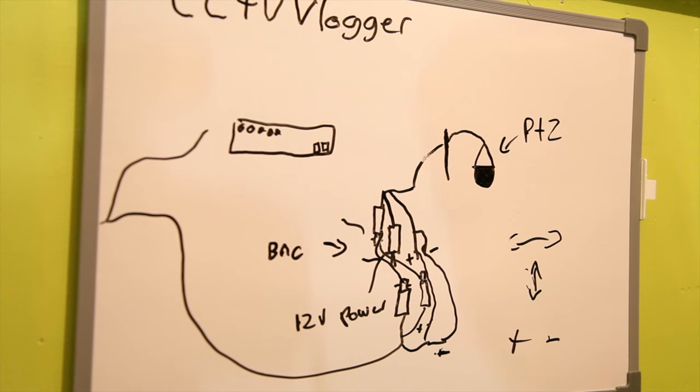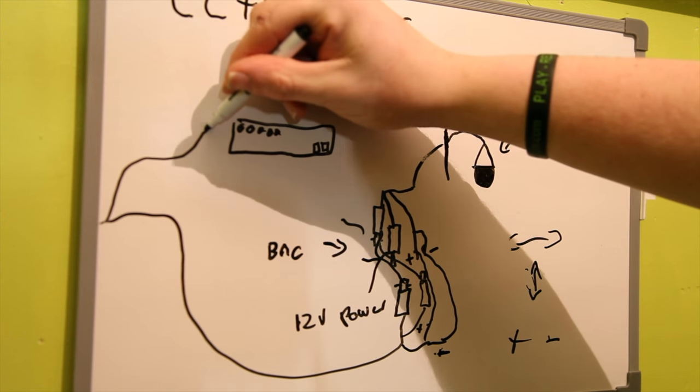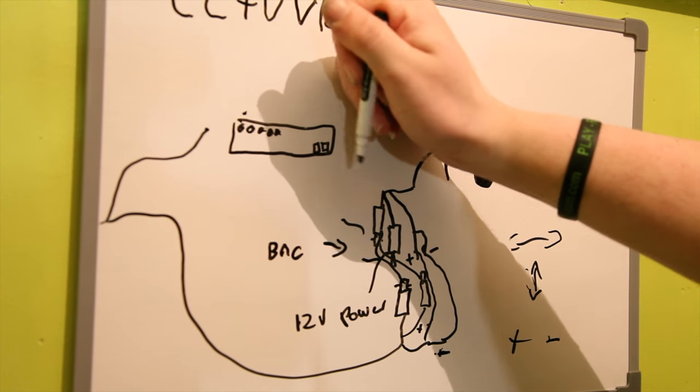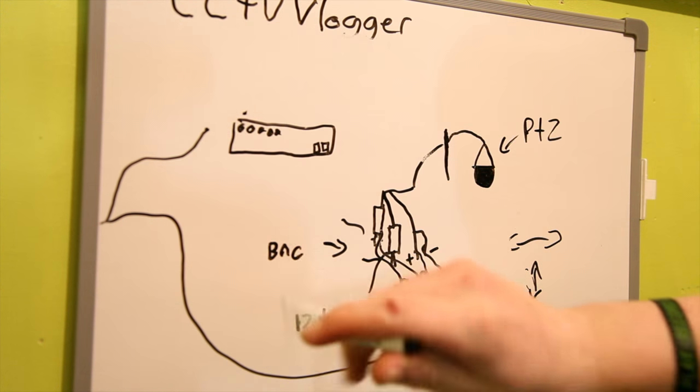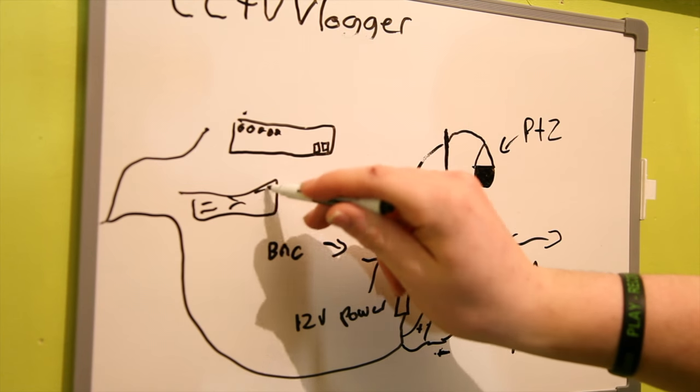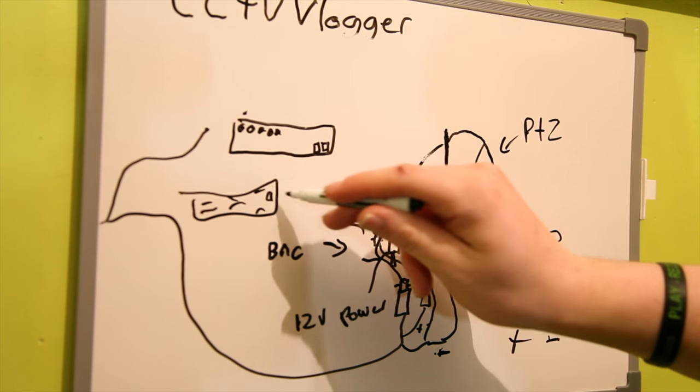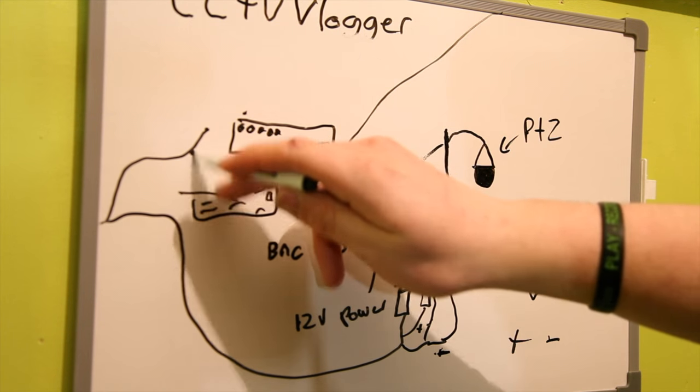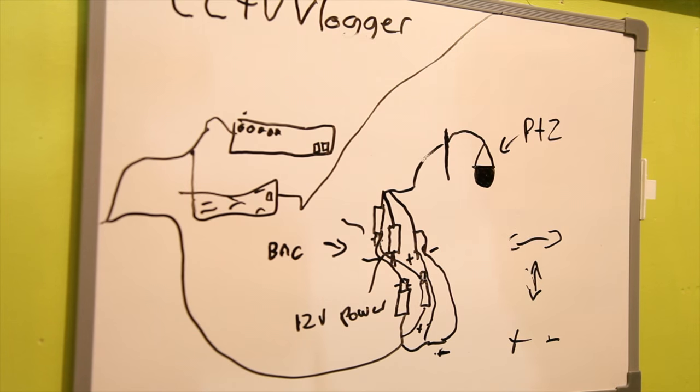It has terminal screws on it. What you want to do is connect the BNC to your BNC input and then your power to your power strip. So connect your power in there and connect your BNC to your input.